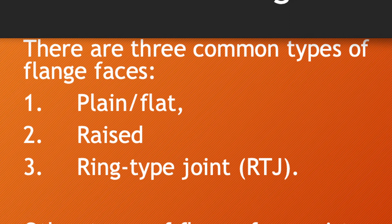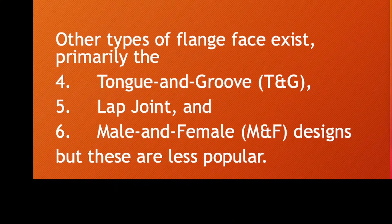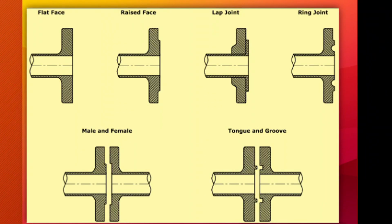The ring type joint is for higher rating flanges, starting from 900, 1500, 2500, etc. Some other types of flanges also exist, which are tongue and groove (TNG), lap joint, and male and female type designs, but these types of flanges are less popular. All six types of flanges are shown in the photos for easy reference.